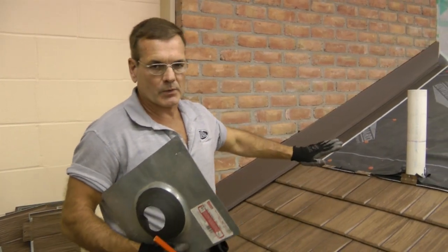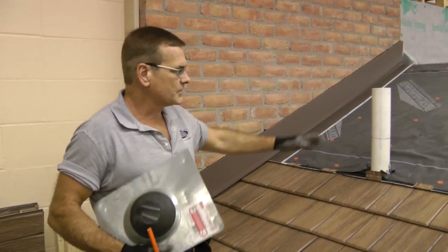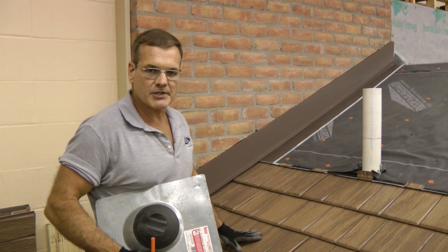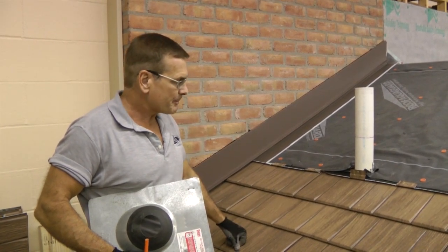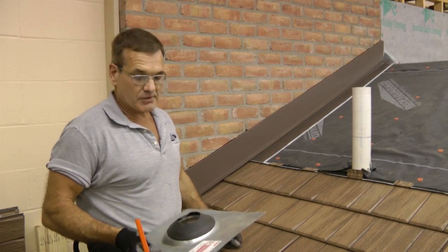As we go up the roof slope here, we're going to now come to a penetration in the roof, particularly here a pipe, and we're going to need to flash around that pipe.